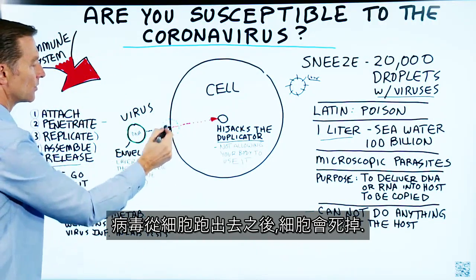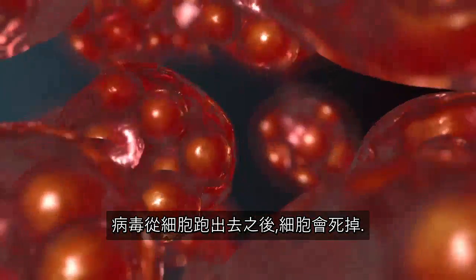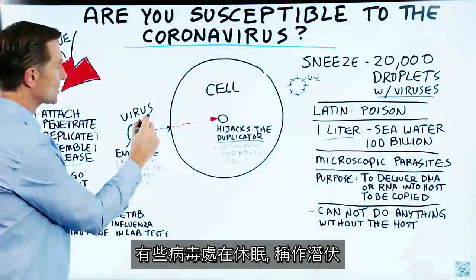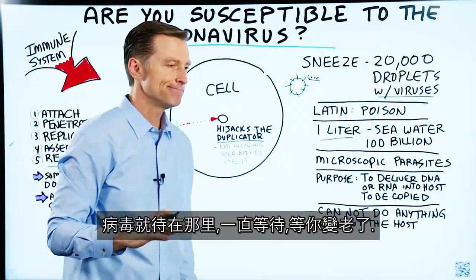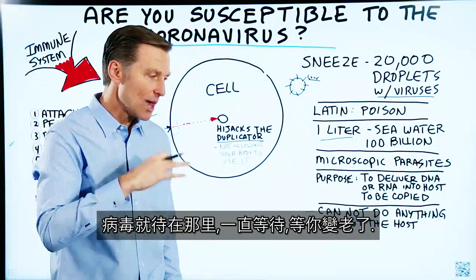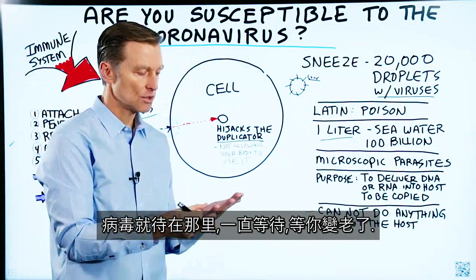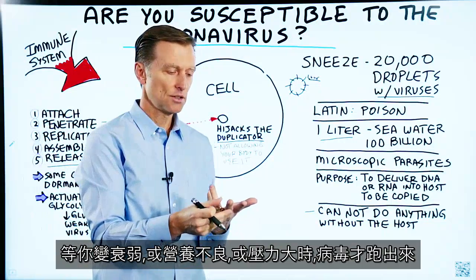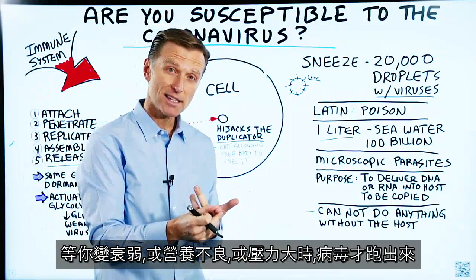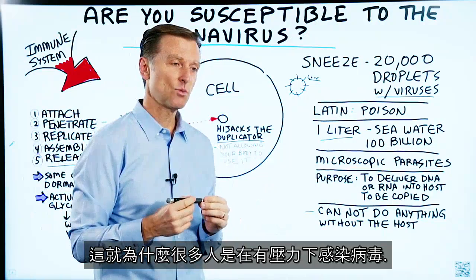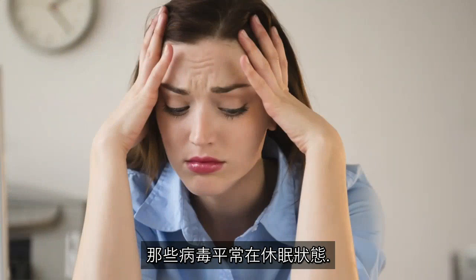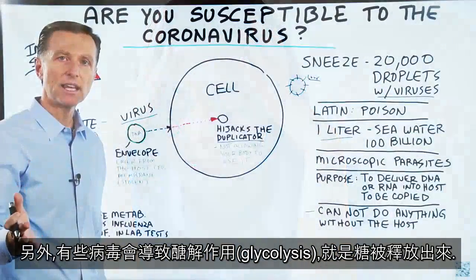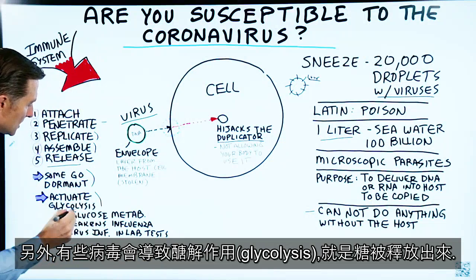After assembly, the viruses are released, and when they get released, the cell usually dies. Some viruses actually go dormant — called latent — they just hang out and do nothing, waiting until you're older, weakened, nutritionally deficient, or stressed, and then they come out. This is why so many people get virus outbreaks during stress states. Another interesting thing: certain viruses can activate glycolysis, which is the release of sugar.